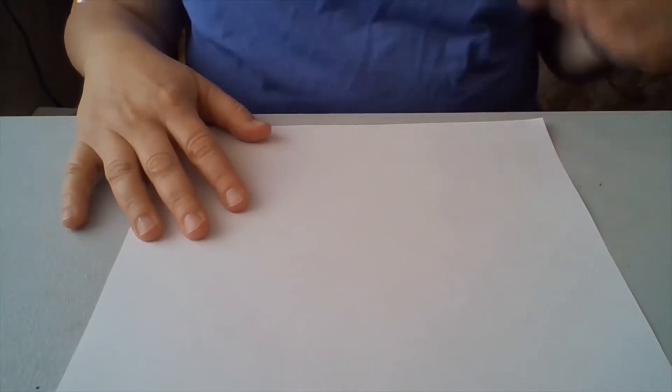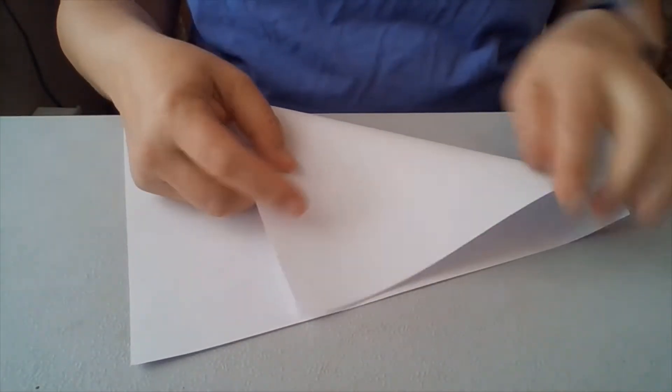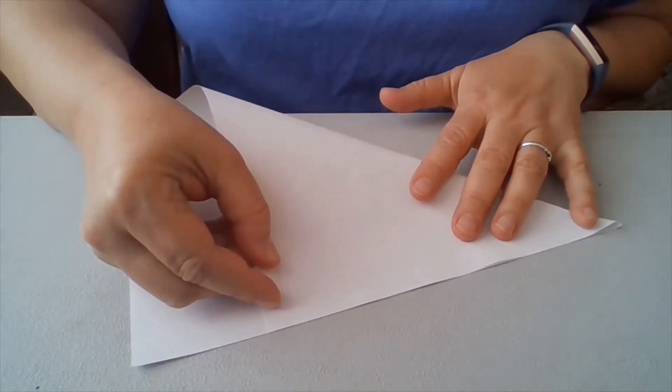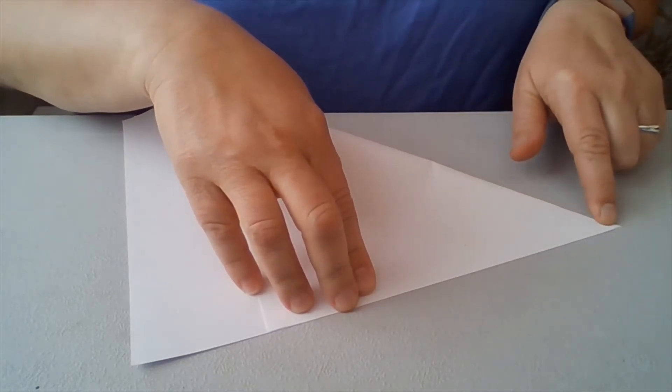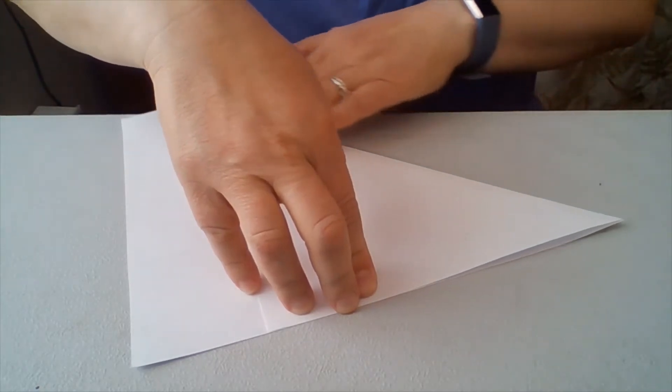Before origami, we almost always want to start with a square. But just a reminder of how we get there, we take a rectangle piece of paper, we fold it over nice and straight along that edge, making sure that corner is split in half. And then we drag our finger along the edge, make a nice sharp fold.